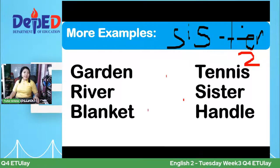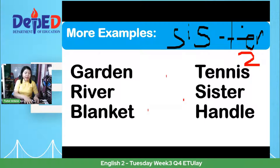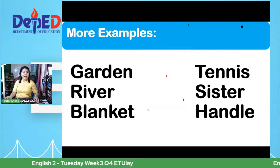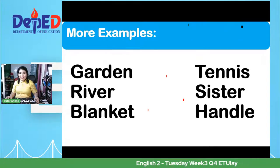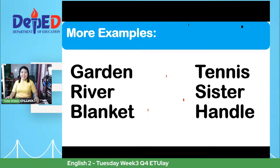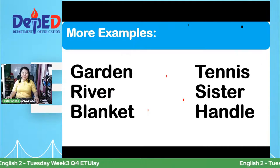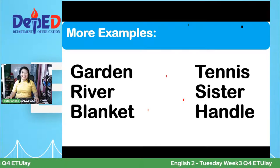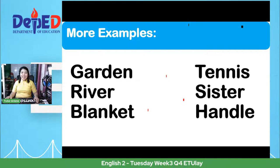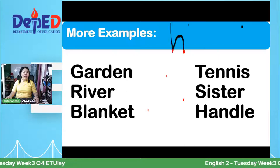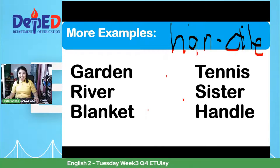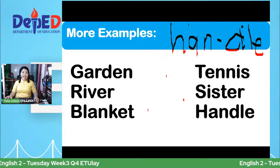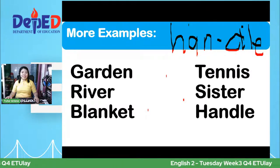For number six, answer it now. The word is 'Handel.' Tama si Alia, Adam, Isabel, Christian. It should be Han-del — two syllables. Great job to those who got the correct answer. Clap your hands for yourself!